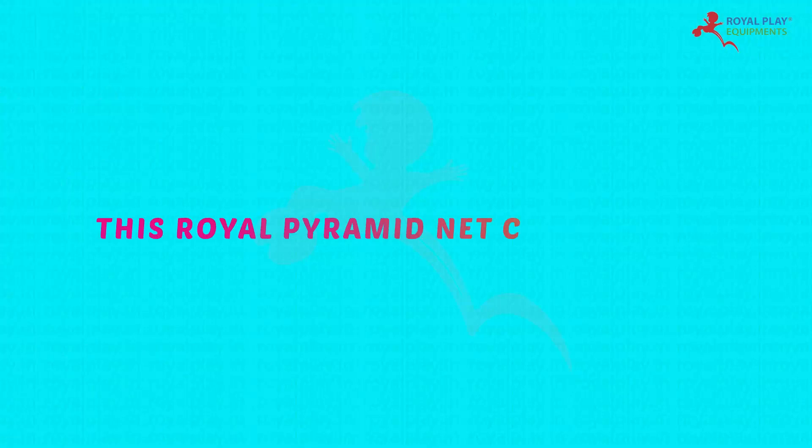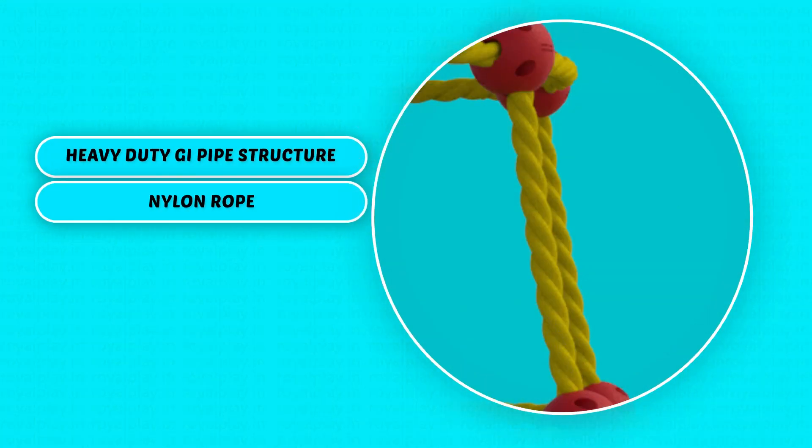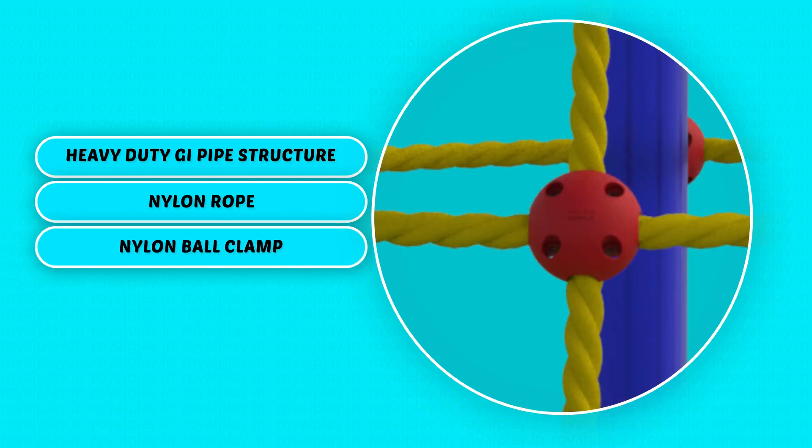This Royal Pyramid Net Climber FE38 consists of heavy duty GI pipe structure, nylon rope, nylon ball clamp.